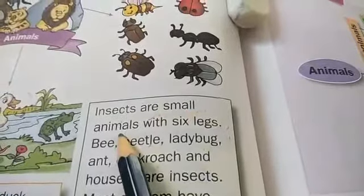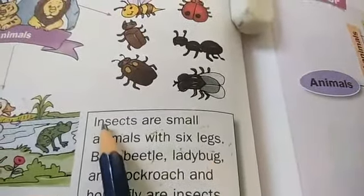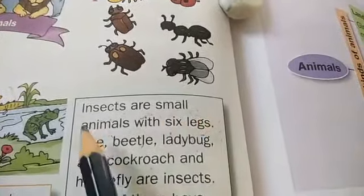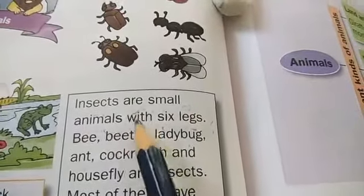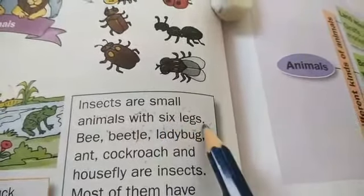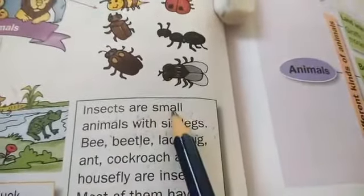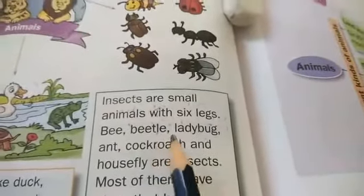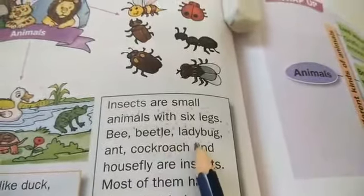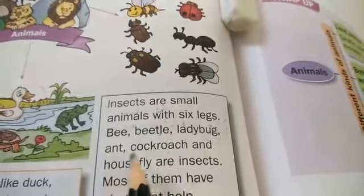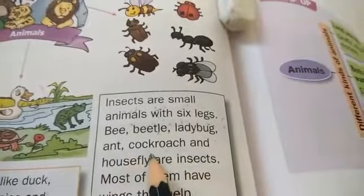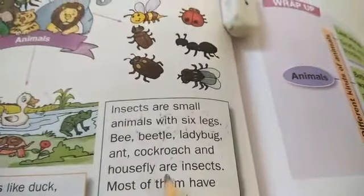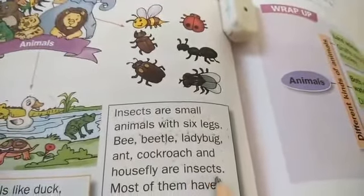Insects are small animals with six legs. Example: B-E-E-T-L-E beetle, L-A-D-Y-B-U-G ladybug, cockroach — C-O-C-K-R-O-A-C-H — and housefly are insects.